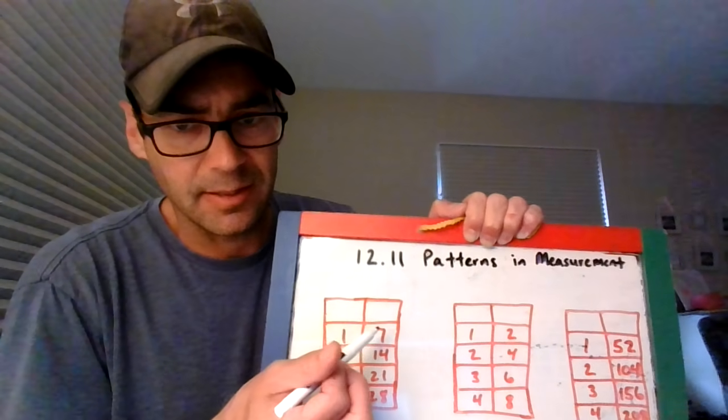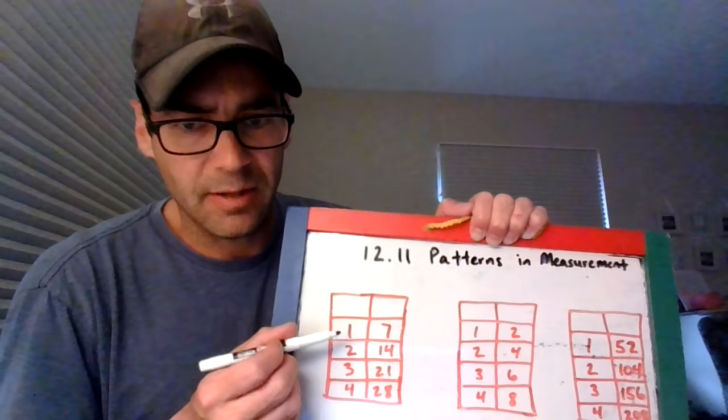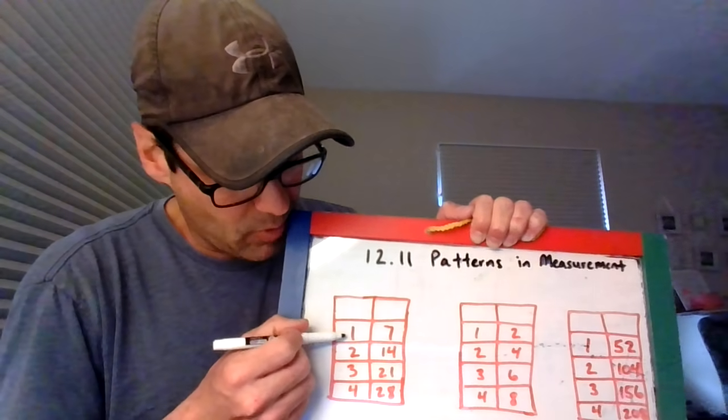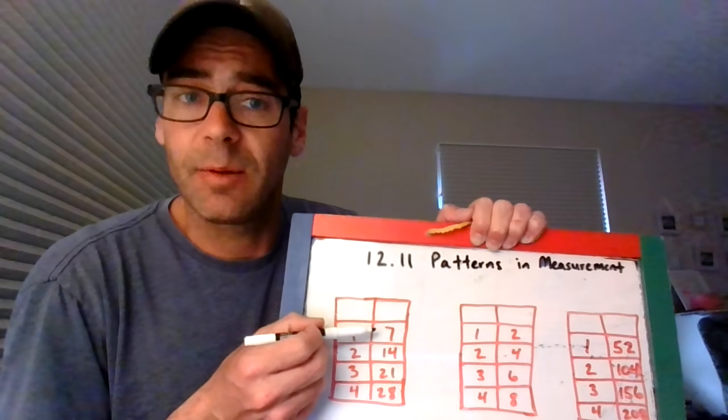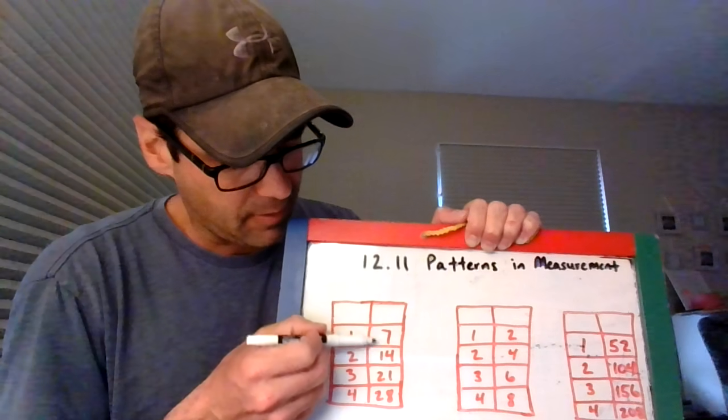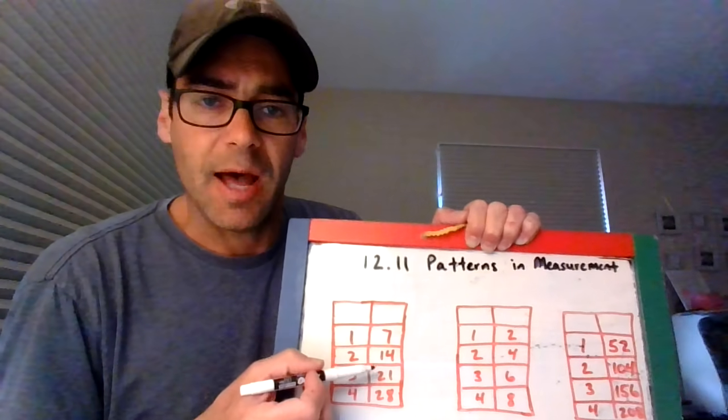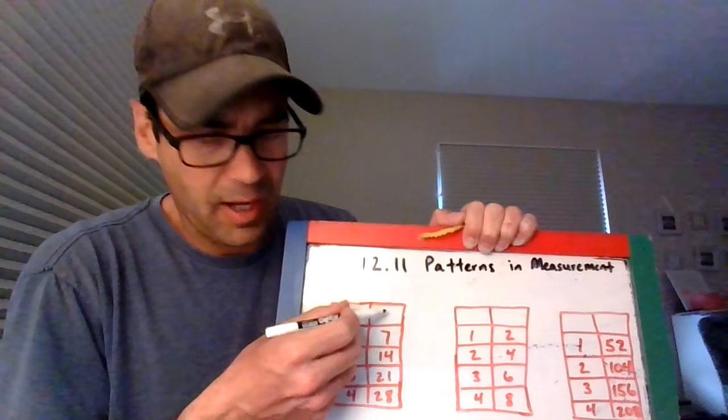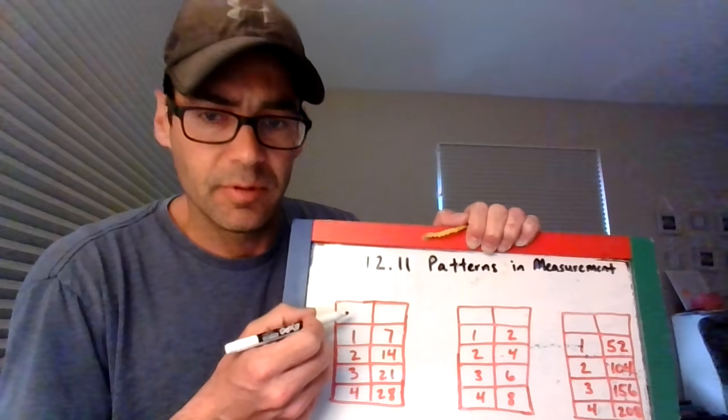This is showing you a pattern. If you look down the left-hand side, it's counting by ones: 1, 2, 3, 4. If you look down the right-hand side, it's skip counting by sevens: 7, 14, 21, 28. Your job is to determine what headings are going to go at the top. What this data is telling you is for one of something, it is equal to seven of something else. For two, it's equal to 14 of something else.